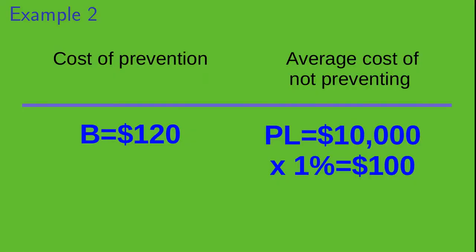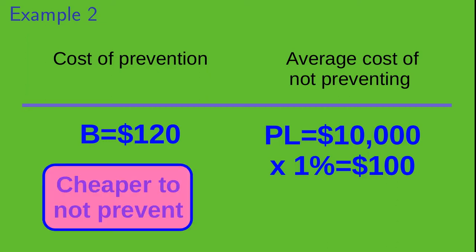The cost of prevention, B, is $120 — that's the cost of the display case. The average cost of not preventing the accident, PL, is $10,000, the value of the vase, times 1%, the probability you assign that your dog will break the vase. We multiply those two together and get $100. So in this scenario, it is cheaper to not prevent the accident, on average.